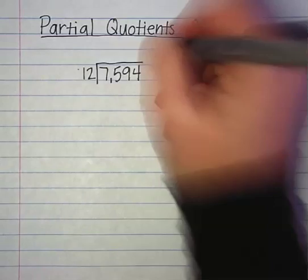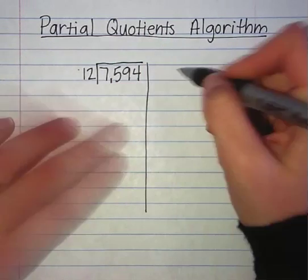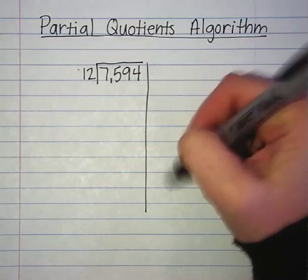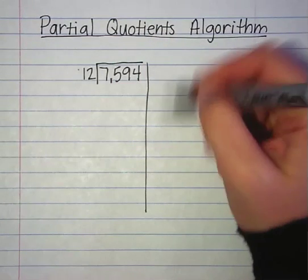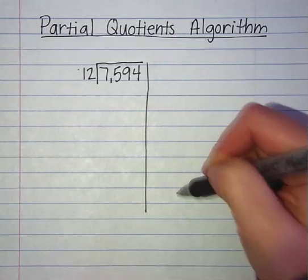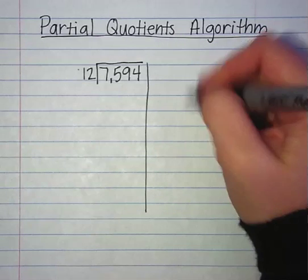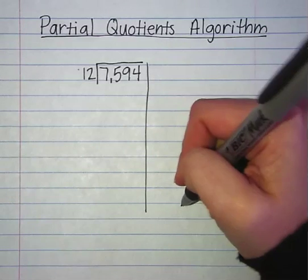When I set this up, I'm going to draw a line off to the side here, and we're going to collect our partial quotients, which we will later be adding. So I'm going to make sure I keep them lined up as I go down.